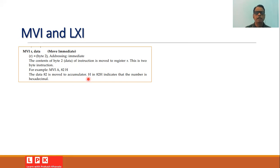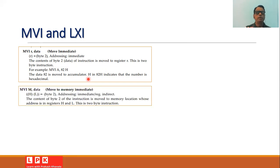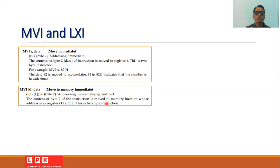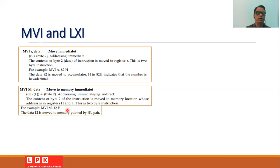Another form is MVI M, data, where the immediate data is moved to a memory location. The byte 2 of the instruction is moved to the location pointed by the HL pair. This uses immediate and register indirect addressing and is also a two-byte instruction. For example, MVI M, 12H moves the hexadecimal data 12 to the memory location pointed by the HL pair.